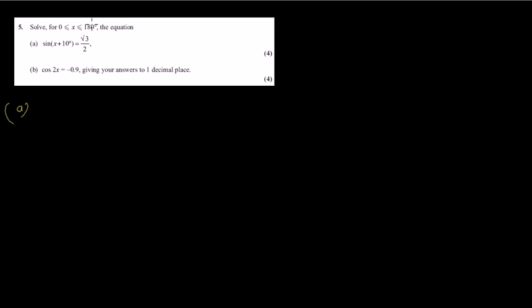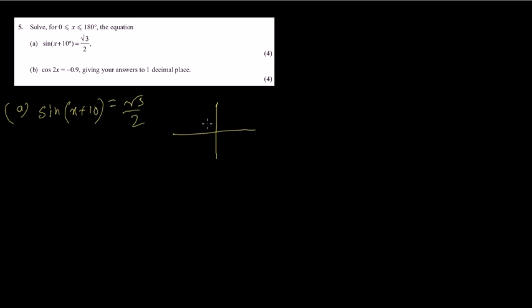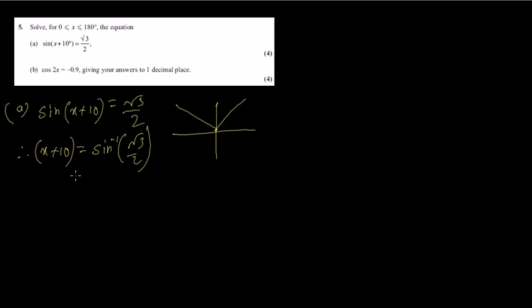Question number 5 is trigonometric solving, in degrees. All sums in C2 are in degrees except for sector, sine rule, and cosine rule — be careful. So sin(x plus 10) equals √3 divided by 2. This is some sort of angle; let's call the theta. First, select the quadrant. Sine is positive, so first and second quadrant. The basic angle is sine inverse of √3/2, which is 60 degrees.